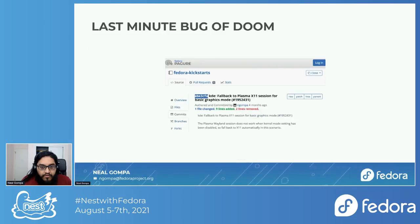But we weren't done yet — we had fixed it for the installed system, but we still didn't have the live environment done. The last bit to fix this bug of doom so we could release Fedora Linux 34 was to implement that logic into our large live environment boot script, livesys and livesys-late. We had to inspect the kernel parameters and generate the flag file manually during livesys, the same way the udev rule would.